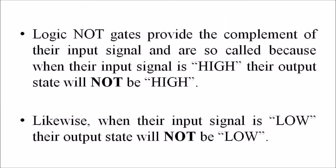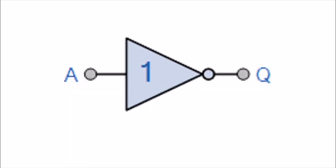The logic NOT gates provide the complement of their input signal and are so called because when their input signal is high, their output state will not be high. Likewise when their input signal is low, their output state will not be low. As they are single input devices, logic NOT gates are not normally classed as decision making devices or even as gates such as AND or OR gate which have two or more basic logic inputs.